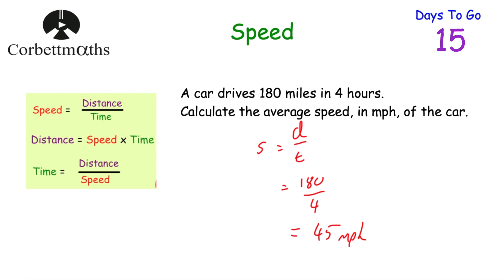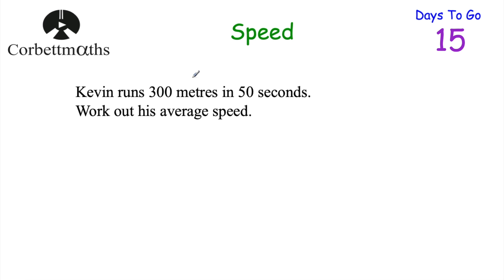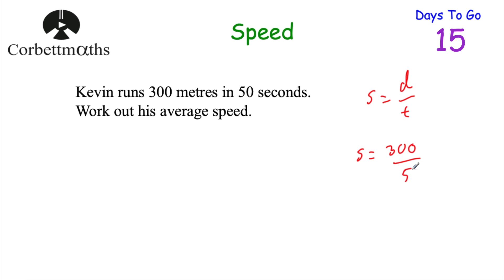Our next question says: Kevin runs 300 metres in 50 seconds. Work out his average speed. Feel free to press pause now to work this out. So we want to find the speed — speed is equal to distance divided by time. We take the distance, which is 300 metres, and divide it by the time, which is 50 seconds. 300 divided by 50 is equal to 6, so it's 6 metres per second. That little slash means 'per', so it's 6 metres per second. That's Kevin's average speed. Well done if you got that.